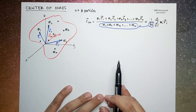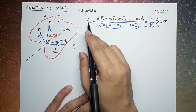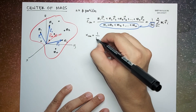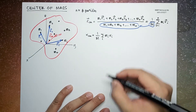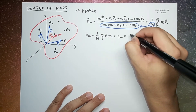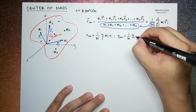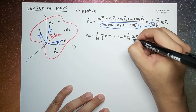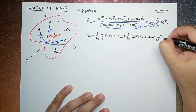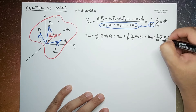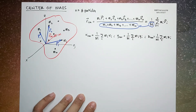In terms of components: the x-component of the center of mass x_cm equals (1/M) times the sum of m_i·x_i for all i. Similarly, the y-component y_cm equals (1/M) times the sum of m_i·y_i for all i, and the z-component z_cm equals (1/M) times the sum of m_i·z_i for all i.